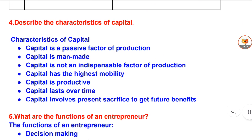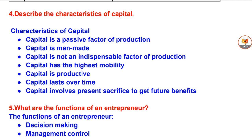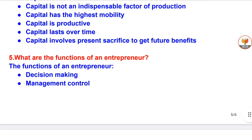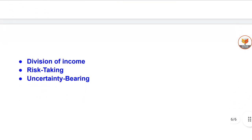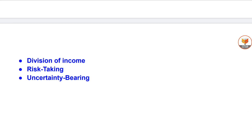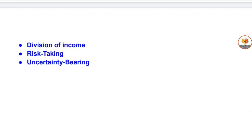Question 4: Describe the characteristics of capital. Characteristics of capital: capital is a passive factor of production; capital is man-made; capital is not an indispensable factor of production; capital has the highest mobility; capital is productive; capital lasts over time; capital involves present sacrifice to get future benefits. Question 5: What are the functions of an entrepreneur? The functions of an entrepreneur include decision making, management control, division of income, risk taking, and uncertainty bearing.